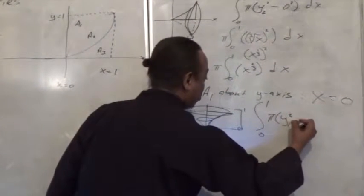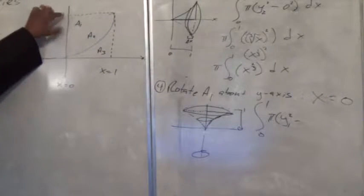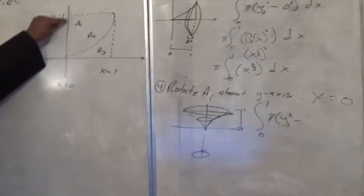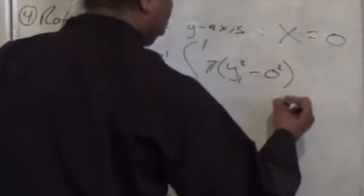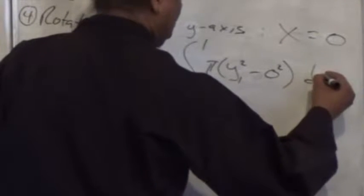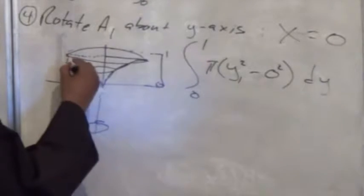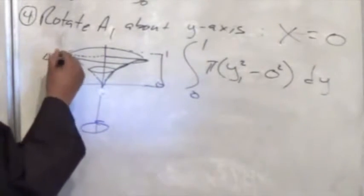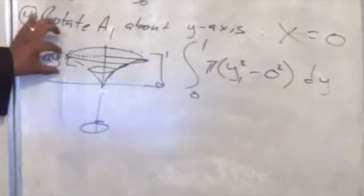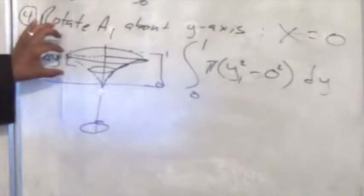Y1 squared minus the inner piece. The inner piece will be this one right here, which will be our x equals 0 — so that's the radius squared. And then this will all be based on delta y's, because the thickness here — the slices here — are delta y's.